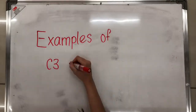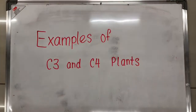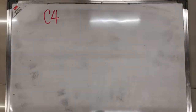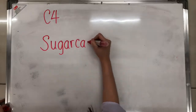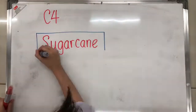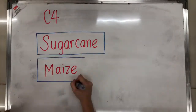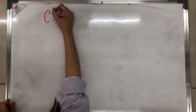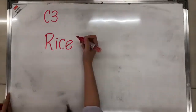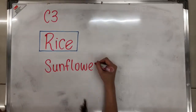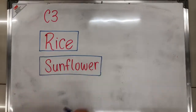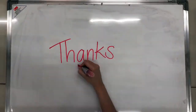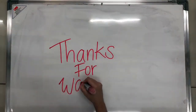Here are some examples of C3 and C4 plants. Sugarcane and maize, also known as corn, are examples of C4 plants, while rice and sunflower are examples of C3 plants. We have come to the end of the video. Thanks for watching!